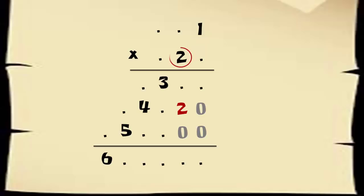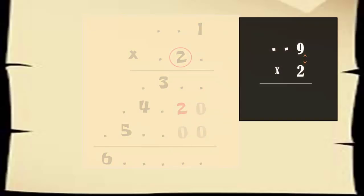But this digit two in the second number gives us two important hints. When you multiply a digit by two, the highest possible carryover you get is one.